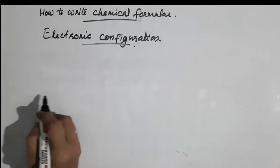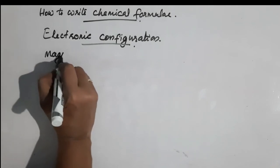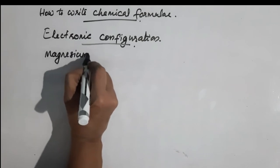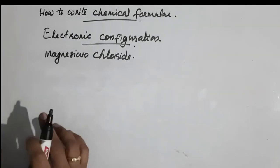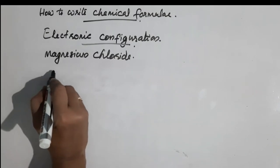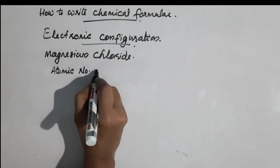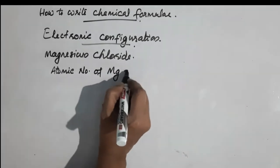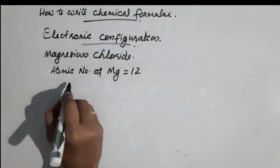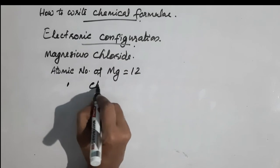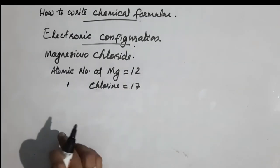The first element is magnesium chloride. The atomic number of chlorine is 17 and the atomic number of magnesium is 12.